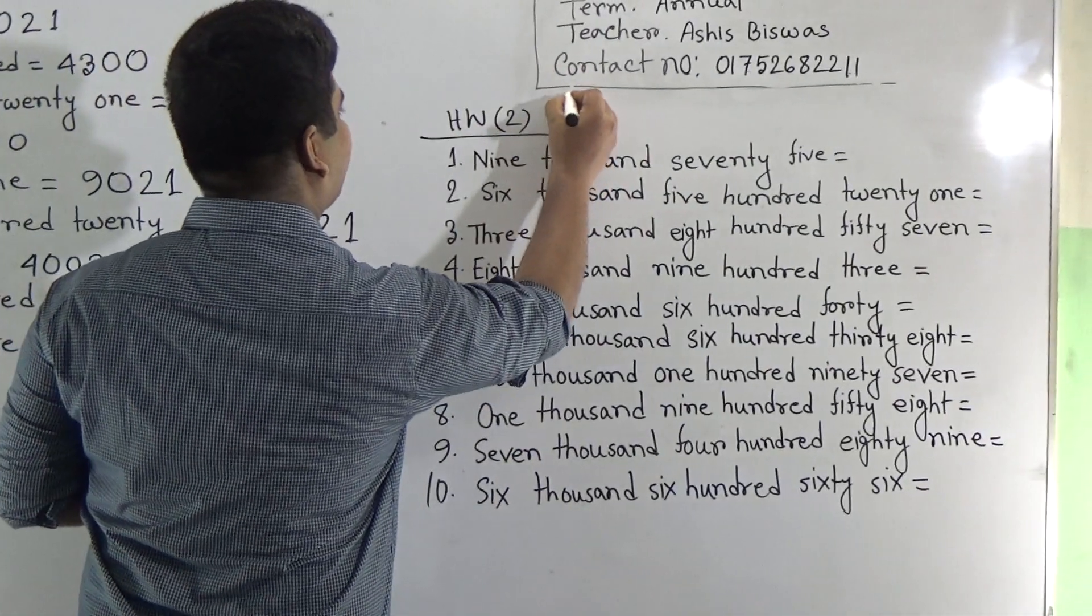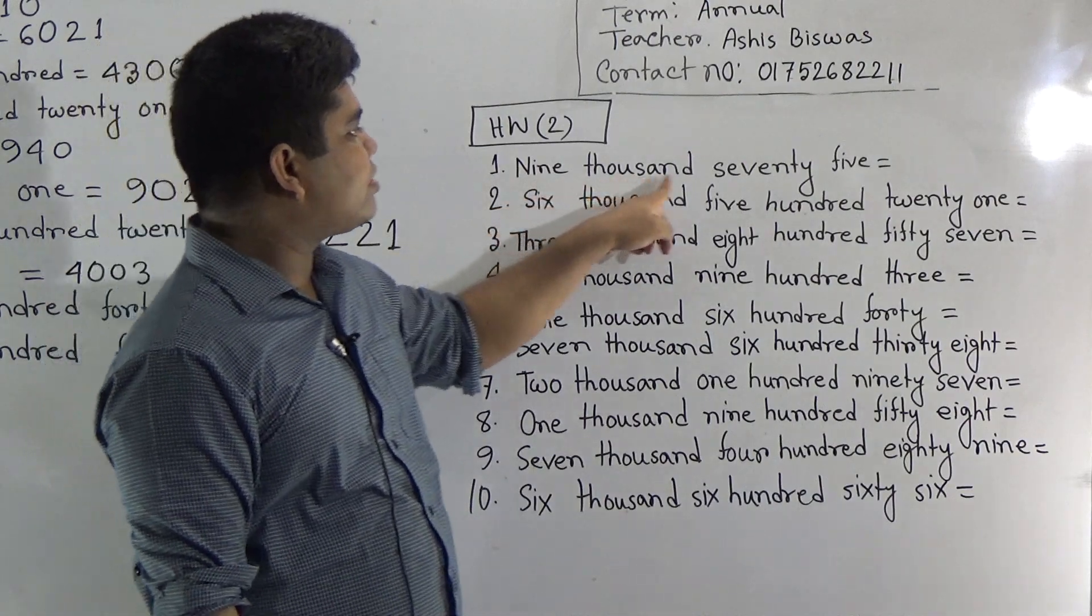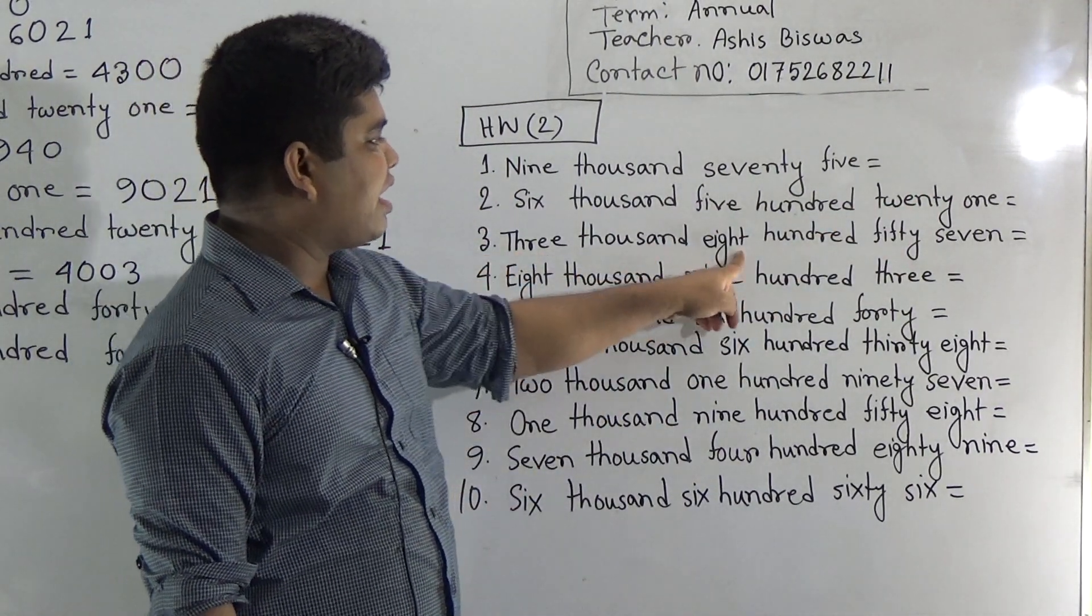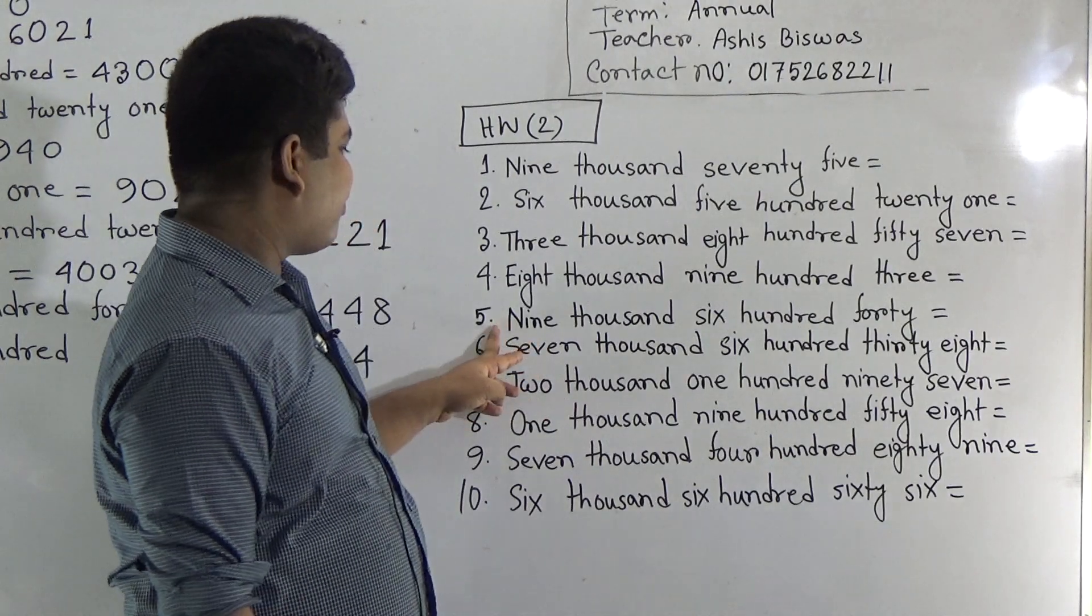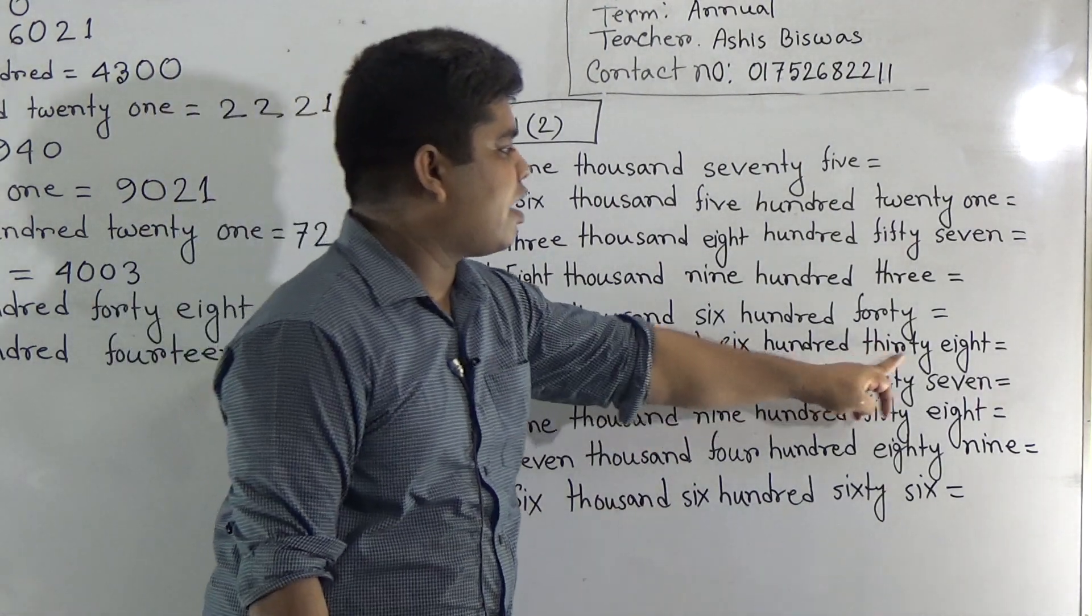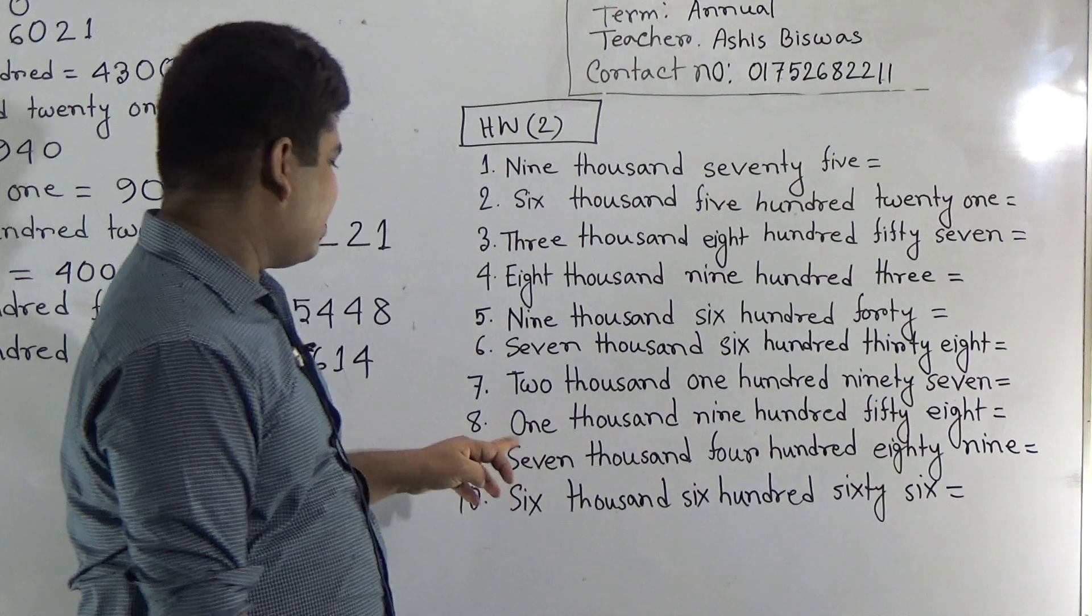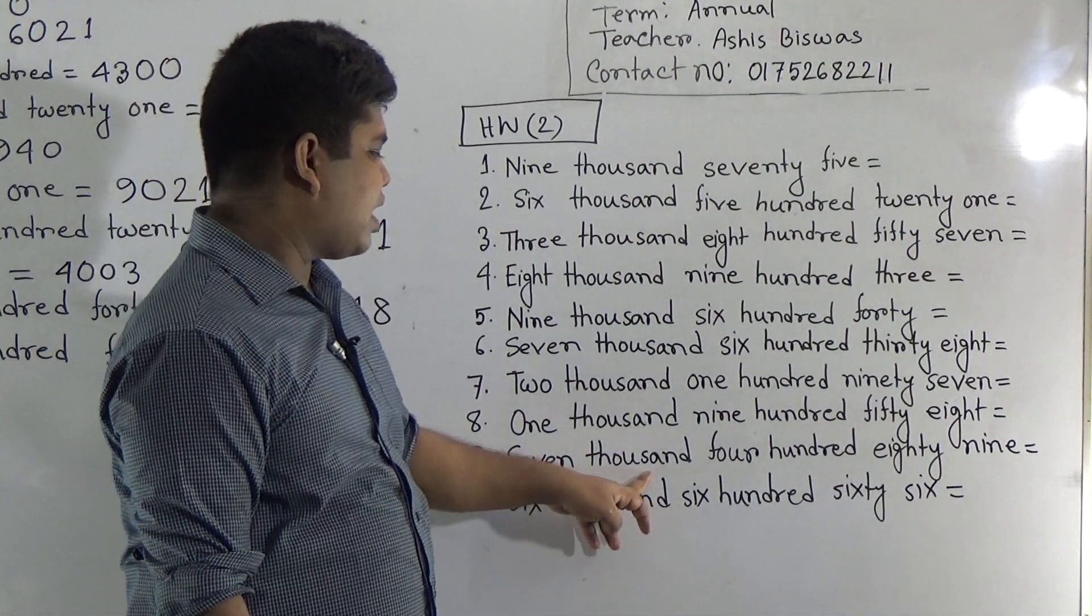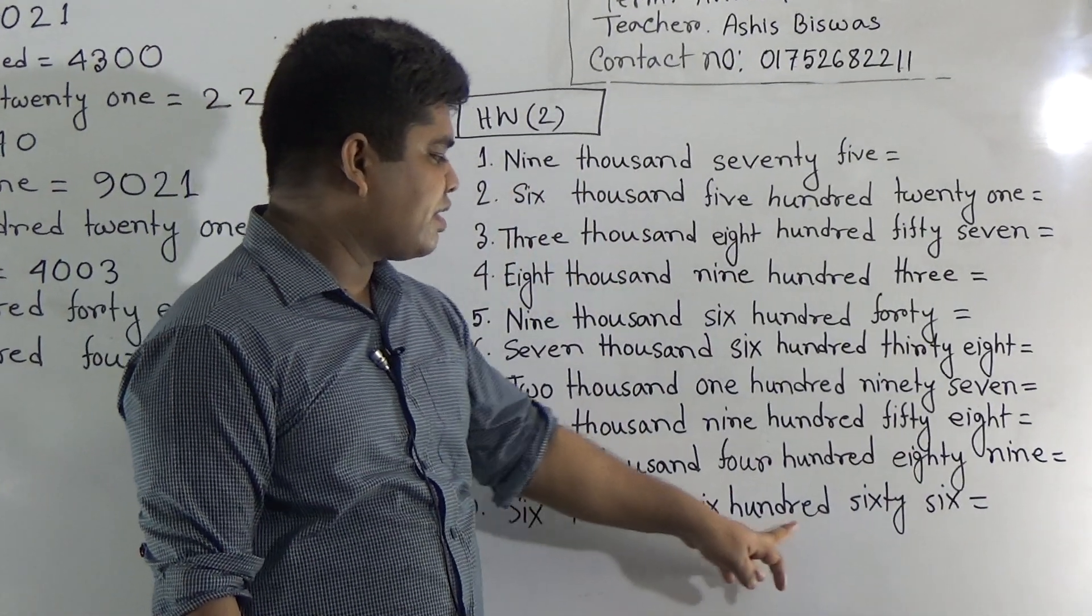Then, it is our SW. And this is SW number 2. Here, 9075. Number 2, 6521. Number 3, 3857. Number 4, 8903. Number 5, 9640. Number 6, 7638. Number 7, 2197. Number 8, 1958. Number 9, 7489. Number 10, 6666.